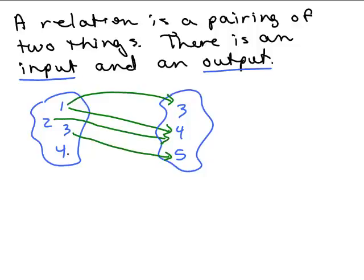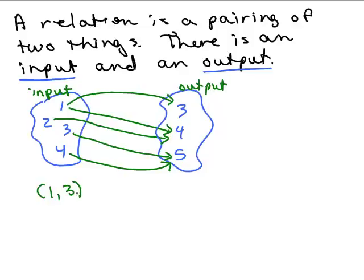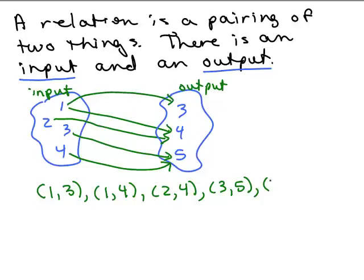Here's an example of a picture of a relation. The input is over here on the left, and the output is over here on the right. If I was going to write that as a set of ordered pairs: if I put in a 1, I get a 3. Also, if I put in a 1, I get a 4 — so those take care of those two lines. And then I've got 2 also going to 4, so here's another ordered pair: (2, 4). I have the ordered pair (3, 5), and the ordered pair (4, 5).